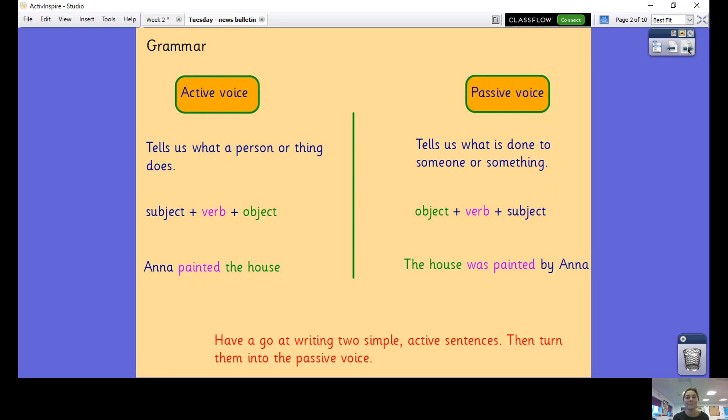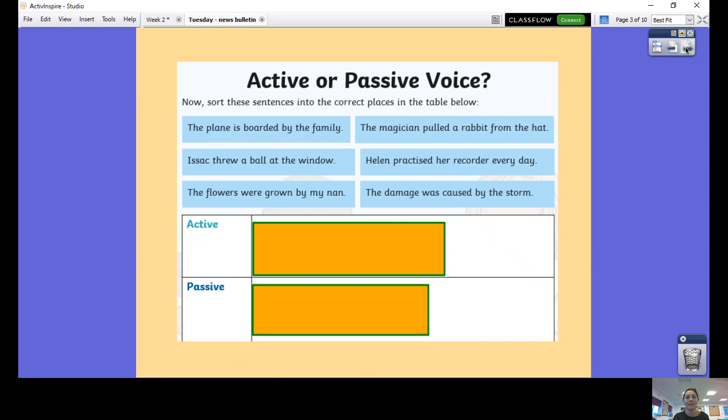We've now got some sentences here that we are going to sort into active or passive. You could draw a table in your book and put active at the top and passive on the other side and sort them into those columns, or you could just put an A or a P next to your sentences to indicate whether you think they are active or passive.